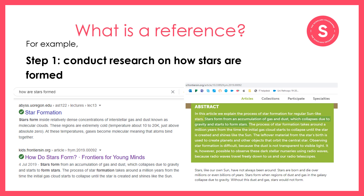Let's have a look at an example of how we can use these steps. You might have an assignment to write about how stars are formed. To help with this assignment you conduct research — you might google 'how a star is formed.' If you click on the second result that comes up on Google, 'How do stars form — Frontiers for Young Minds,' you'll read the article on that webpage. You might learn useful information such as stars forming from an accumulation of gas and dust which collapses due to gravity.